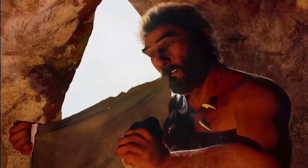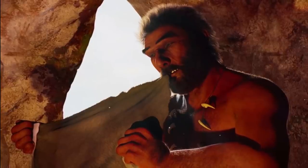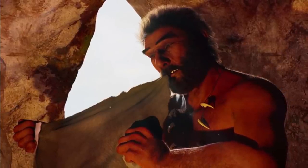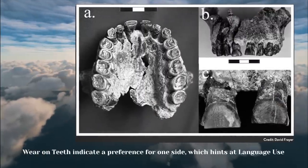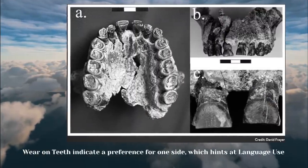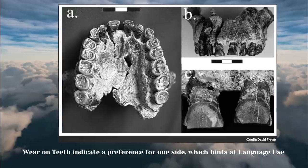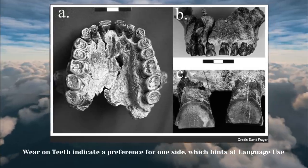Furthermore, new research suggests right-handedness in humans goes back at least 1.8 million years. The controversial Homo habilis, who lived in what is now Tanzania some 1.8 million years ago, appears to also have favored his or her right hand, according to new research published in the Journal of Human Evolution.